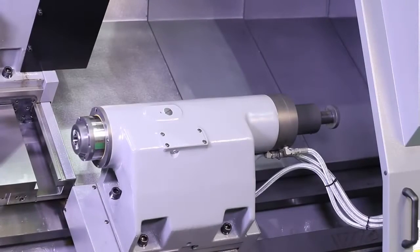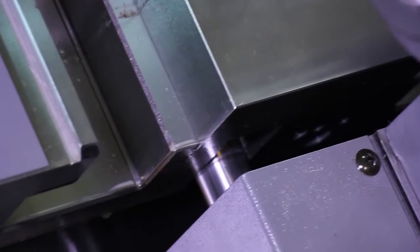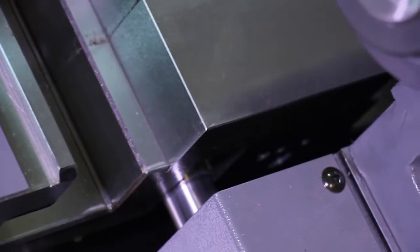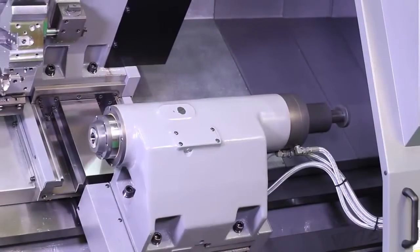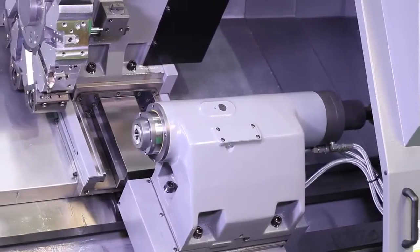A heavy-duty turret coupled tailstock is also standard on the machine. It is hydraulically clamped to the wide box guideways for maximum machining rigidity. Operation is fully programmable with 4.72 inches of quill travel and an MT number four center.